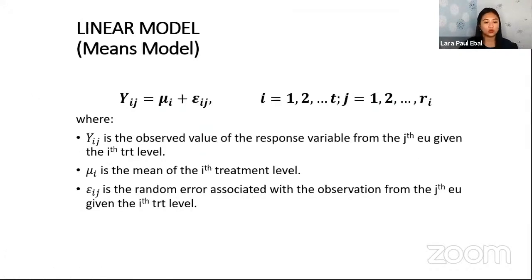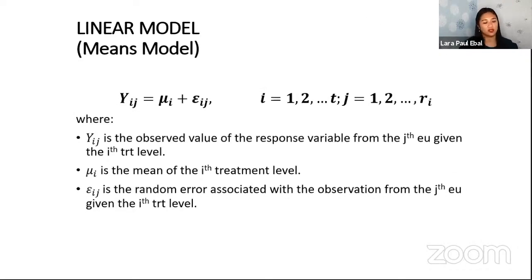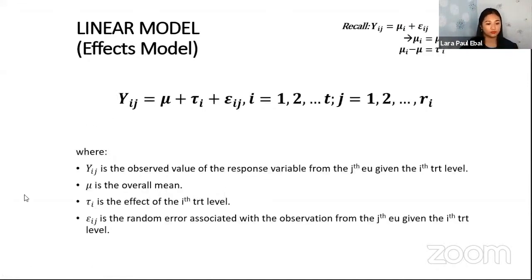And then take note also that once we have the responses, we can model the responses. So we have this means model, and we also have this fixed model. So for the means model, we have Yij equal to μi plus εij. So this Yij is your observed value, yung nakuha mong response. And then the μi is the mean of the ith treatment level, the mean for that group, for that treatment level. And then the εij is the random error.